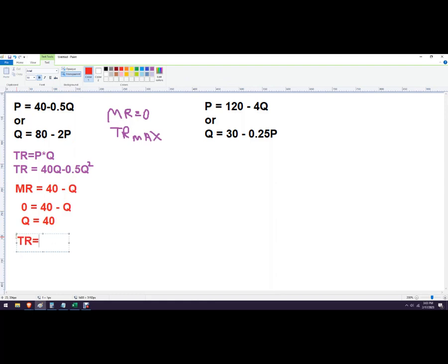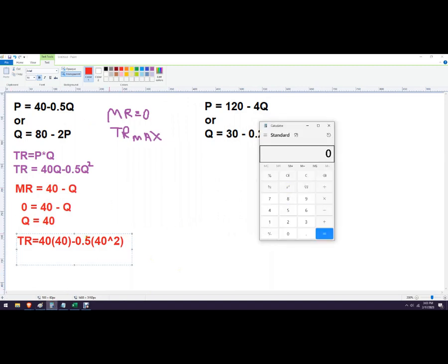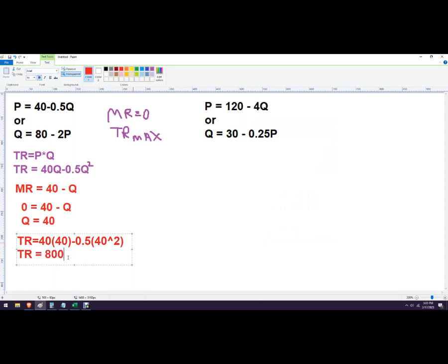So let's see what that total revenue would be. So we're just going to plug that back into our total revenue function. This would be 40 times 40 minus 0.5 times 40 squared. And make sure I don't make a mistake. Let's get out the calculator here. So 40 times 40 is 1,600. That part's pretty easy. And then over here is 1,600, so that's half of that, so 800. So 1,600 minus 800 would be total revenue is 800.